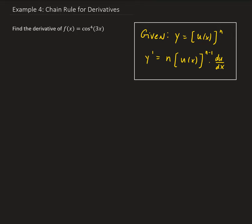In this example, we want to find the derivative of f(x) equals cosine of 3x all raised to the fourth power. To do this, we need to use the general power rule. We're going to take care of the outside power first and then work our way towards the inside.